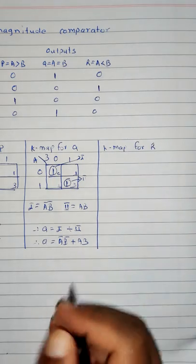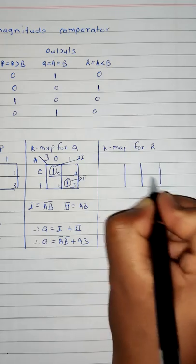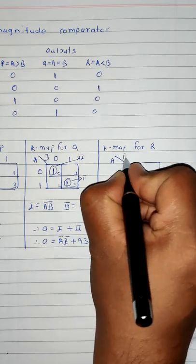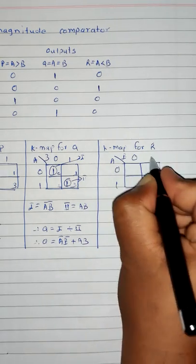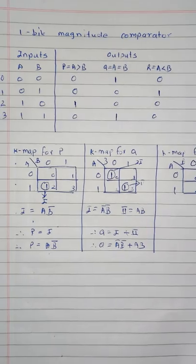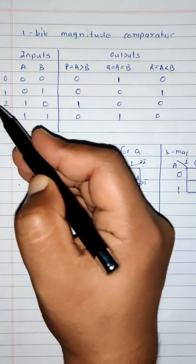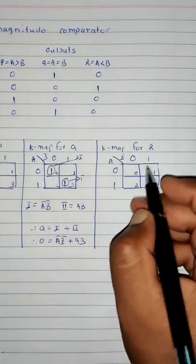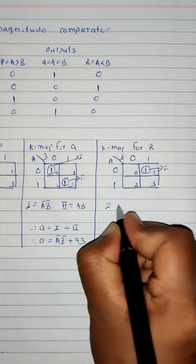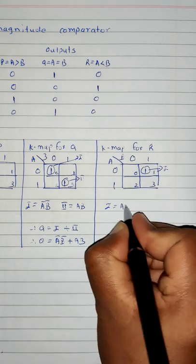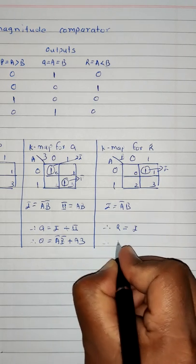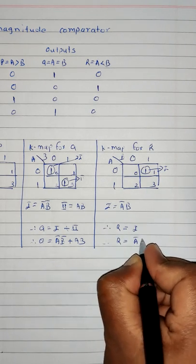Finally, let's solve the K-map for R. We draw a two-variable K-map with variables A and B, values 0 and 1, cells numbered 0 to 3. The R output is 1 only at cell 1, so we write 1 at cell 1. Group 1 gives A=0, B=1, which is ĀB. Therefore, R = ĀB.